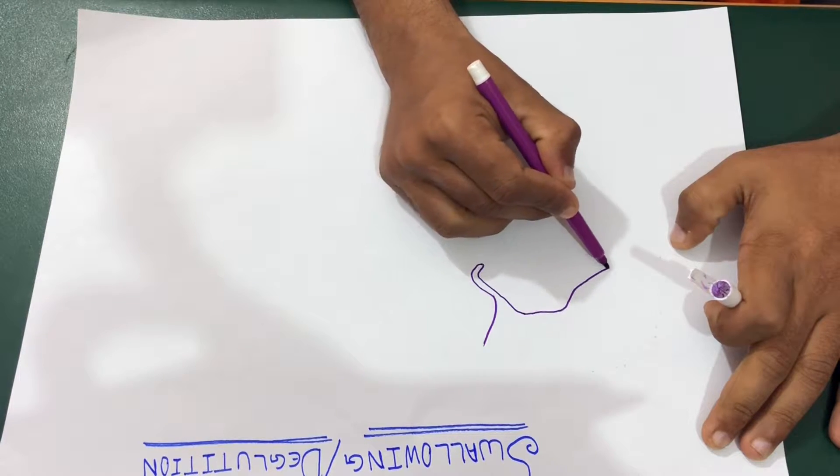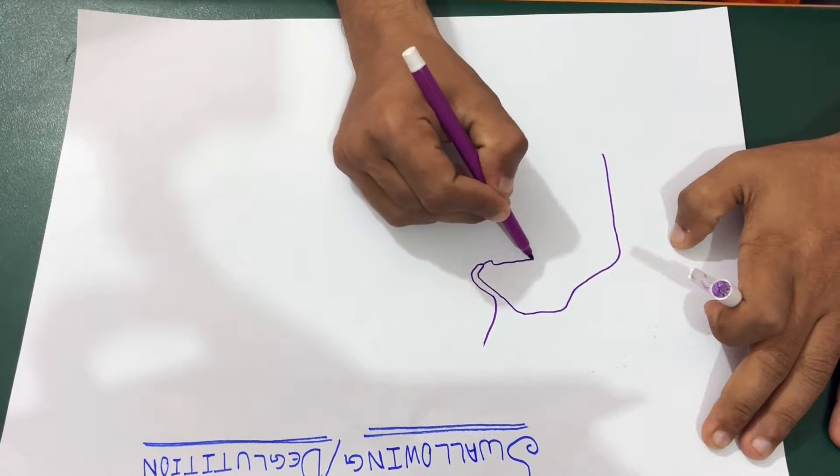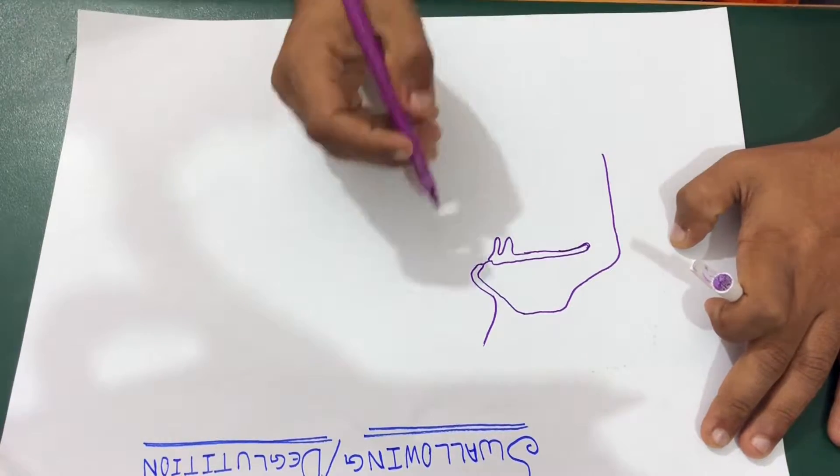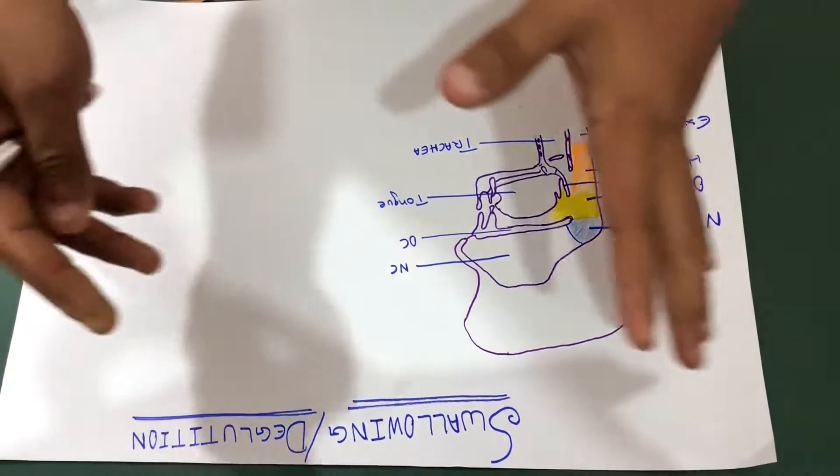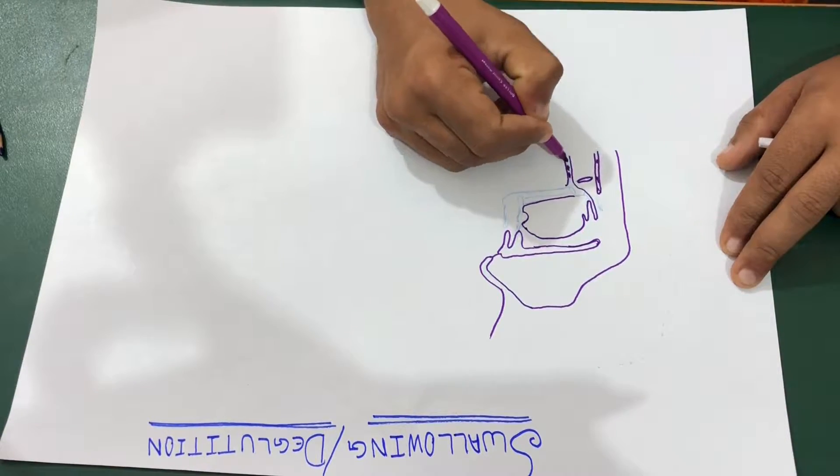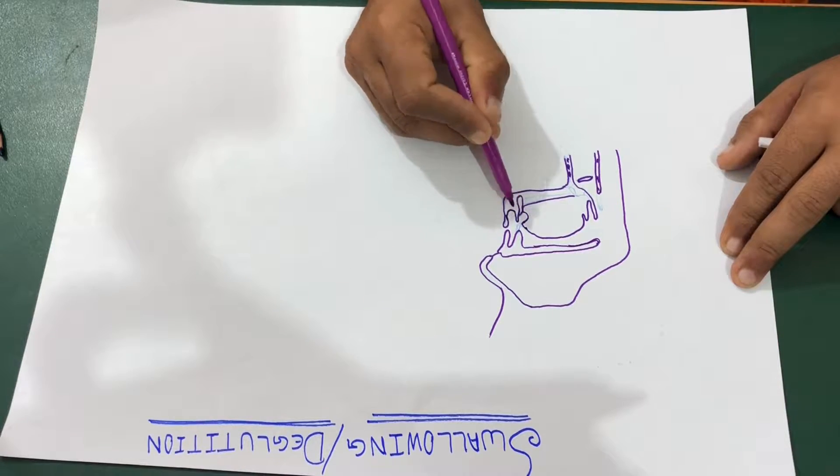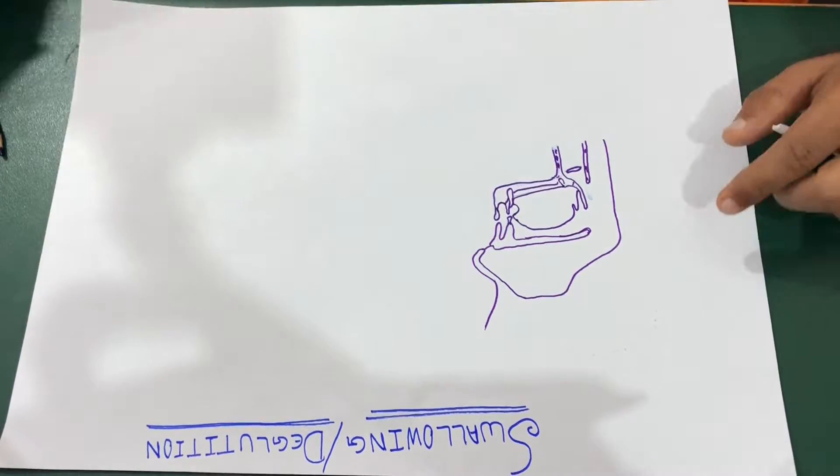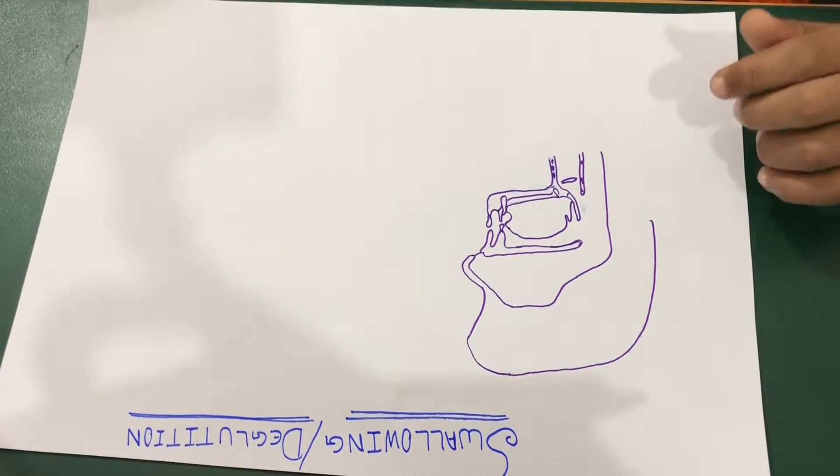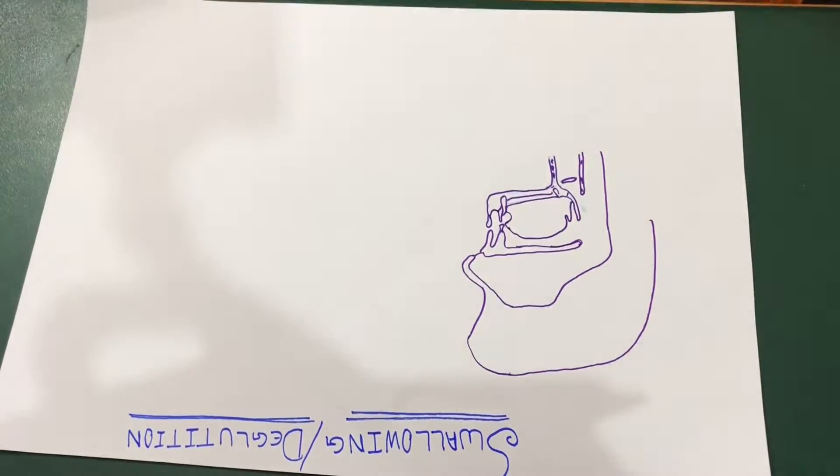Movement of your food from mouth till stomach via esophagus is called the deglutition or the swallowing. So this swallowing or deglutition is actually divided into three stages. We're going to talk about these three stages that is the oral stage, pharyngeal stage and esophageal stage, but first we have to explain the diagram.